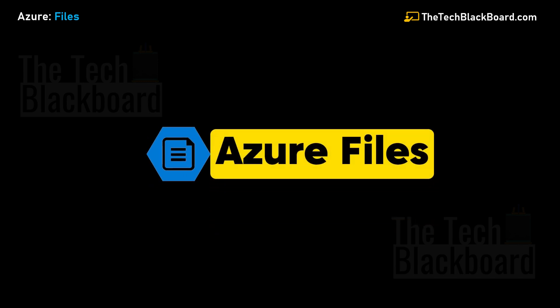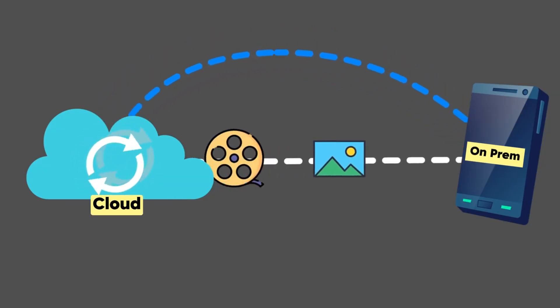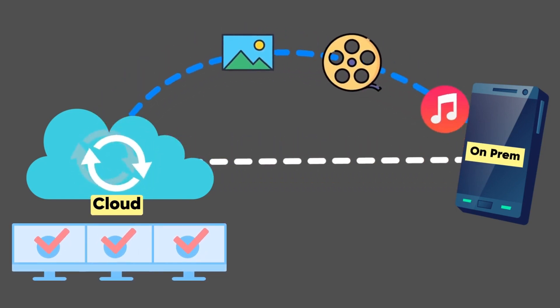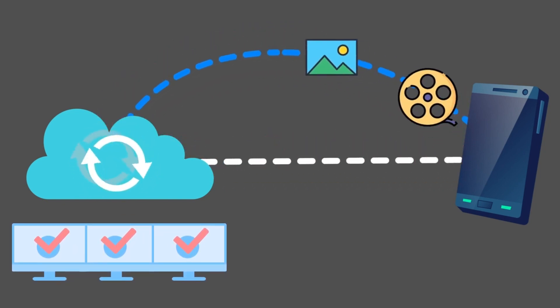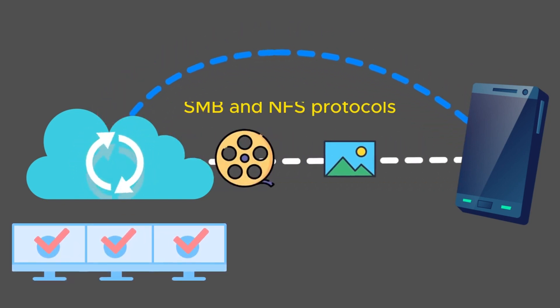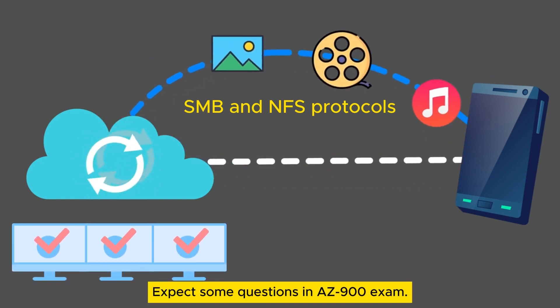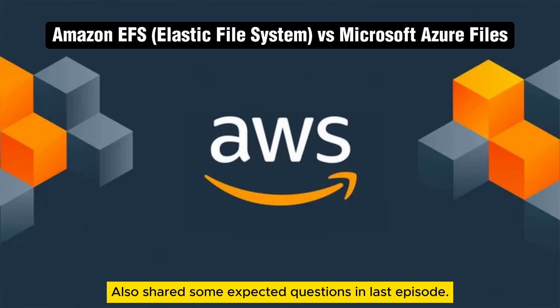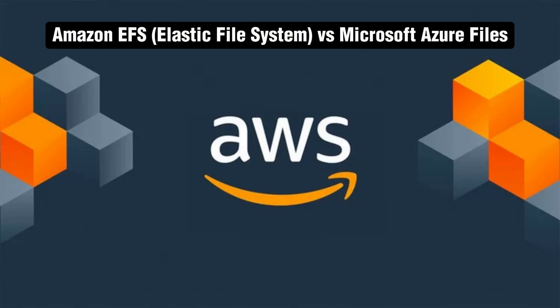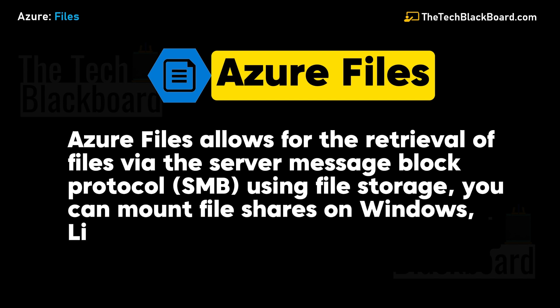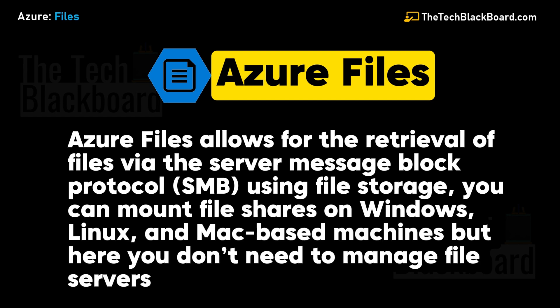Azure Files are organized file shares for cloud and on-premises deployments — you can store files accessible from different Azure virtual machines. Importantly, Azure Files works on the SMB (Server Message Block) protocol. You may get questions about this in the AZ-900 Fundamentals exam. If you come from an AWS background, it is very similar to Amazon EFS. Azure Files allows retrieval of files via the SMB protocol.